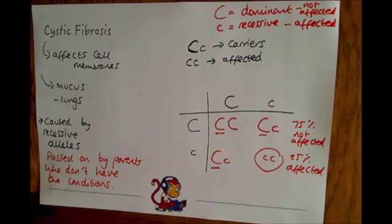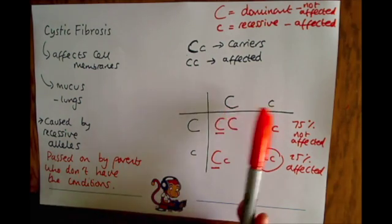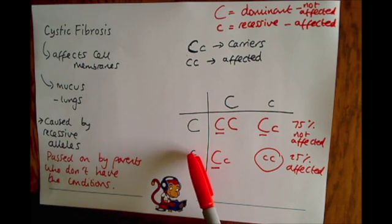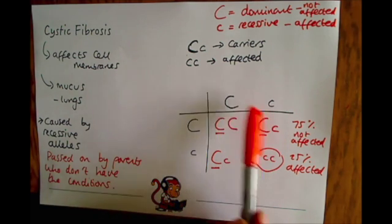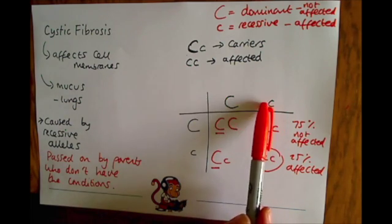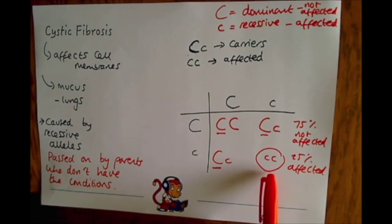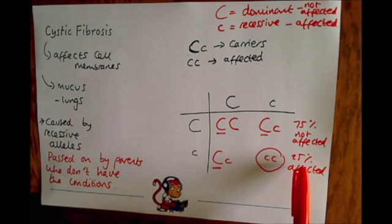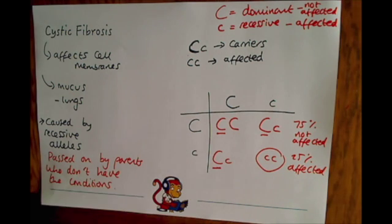A lot of parents that have children with cystic fibrosis don't know themselves that they're actually a carrier of the gene. Because they're not affected by it themselves, they've got this heterozygous combination of alleles. They don't know they have the possibility of having a child with cystic fibrosis, but they do have a 25% chance of their child having this genetic disorder.